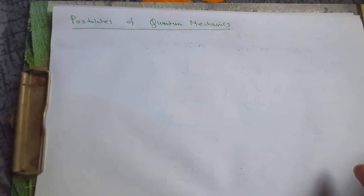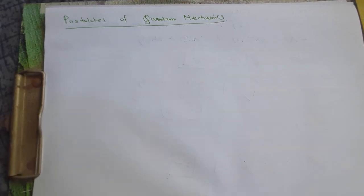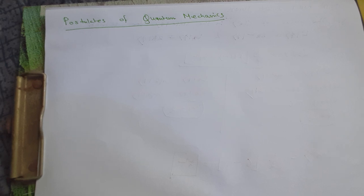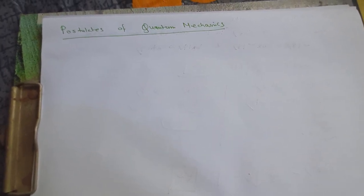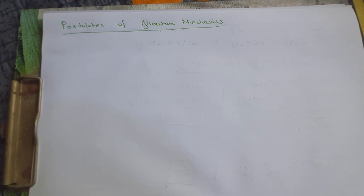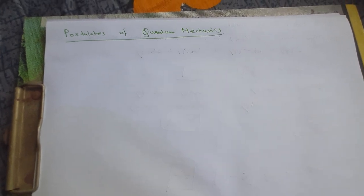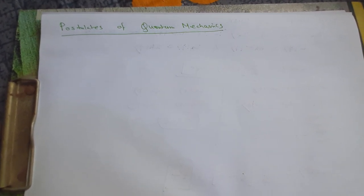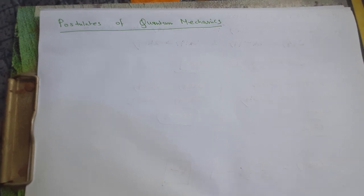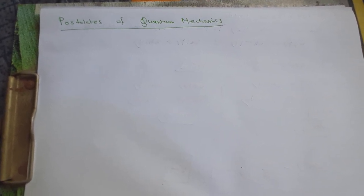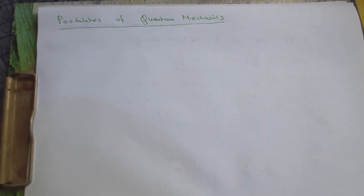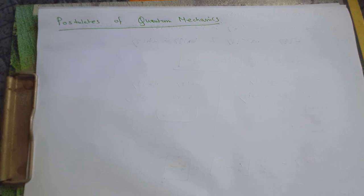Welcome back students. In this video we are going to learn about the postulates of quantum mechanics. We need postulates in quantum mechanics because there was a set of experiments giving results that could not be explained by classical mechanics. That's why they came up with quantum mechanics, but to formulate the theory they needed some basic assumptions.